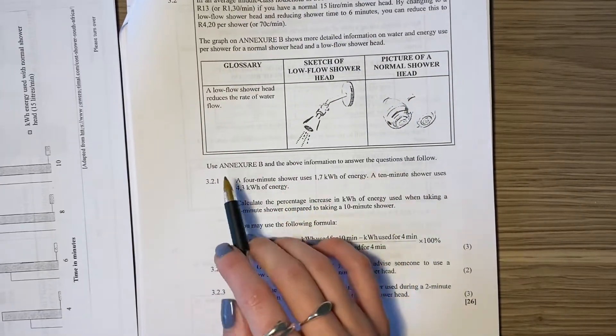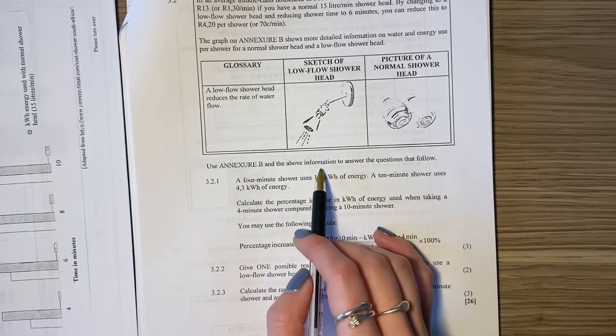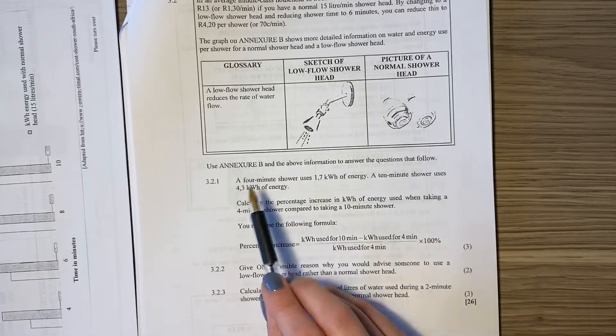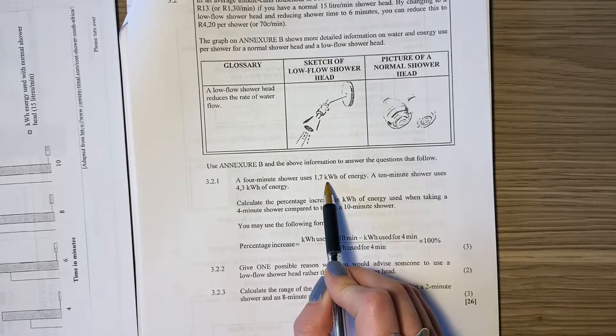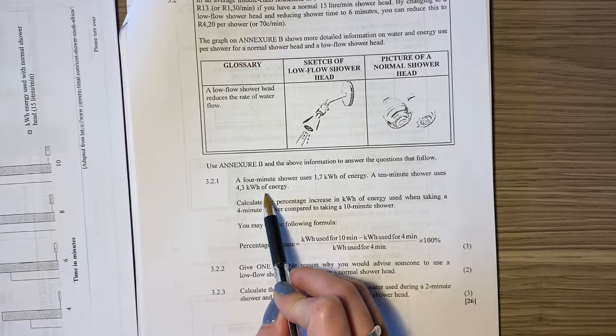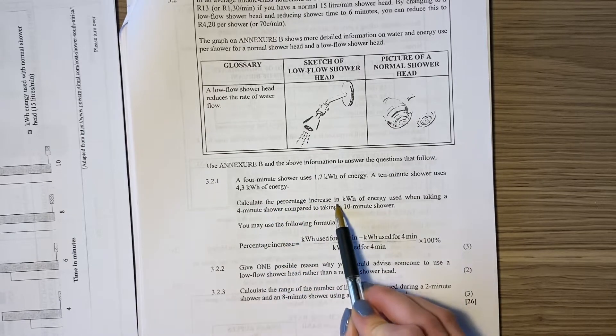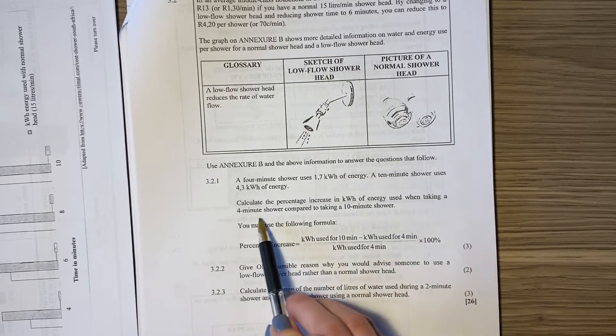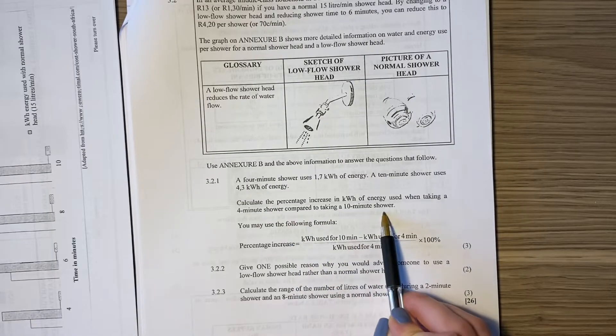It says here, use Annexure B and the above information to answer the questions that follow. A four minute shower uses 1.7 kilowatts of energy. A 10 minute shower uses 4.3 kilowatts of energy. Calculate the percentage increase in kilowatts of energy used when taking a four minute shower compared to taking a 10 minute shower.